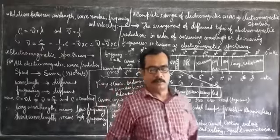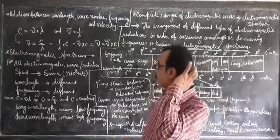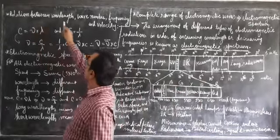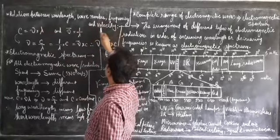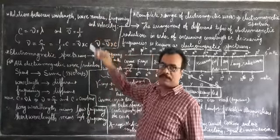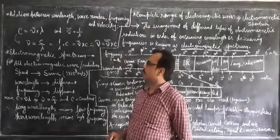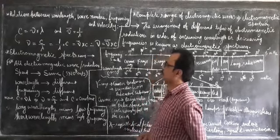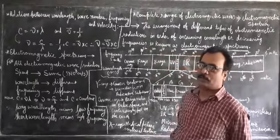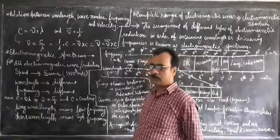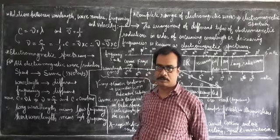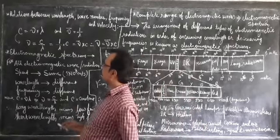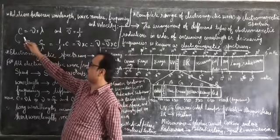Today I'll discuss the relation between wavelength, wave number, frequency, and velocity. These terms were explained yesterday in lecture number 11 when we discussed wave motion and the characteristics of wave motion.